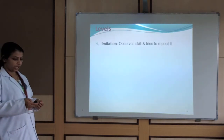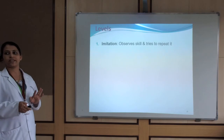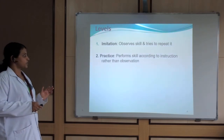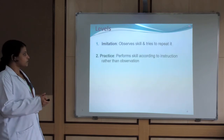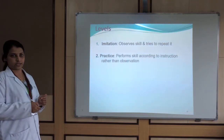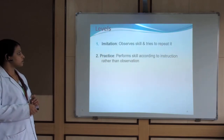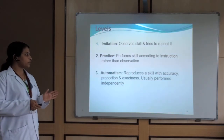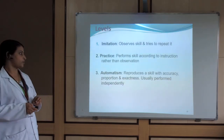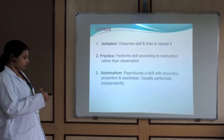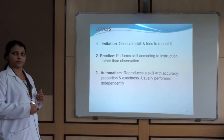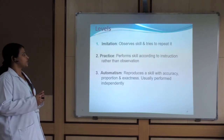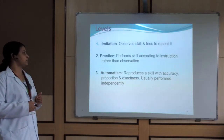Imitation is the observation of skill — the first level of psychomotor domain. Practice is the second level, where in the presence of an expert you have to perform the skill. Automatism is the third level — because of repeated practice, one reaches a level of independence. These are the three levels of psychomotor domain: Level 1 imitation, Level 2 practice, Level 3 automatism.